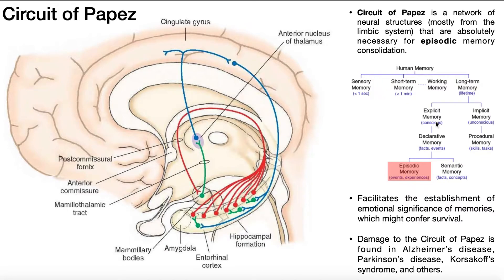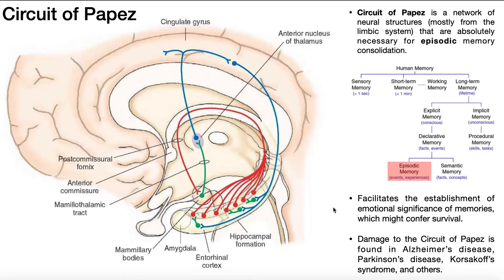Explicit memories are conscious memories, and most are declarative memories having to do either with facts or events. Semantic memory is a type of declarative memory about facts or concepts — when you're studying for a history or biology exam and learning facts to regurgitate on an exam, that's semantic memory. Episodic memory is more about events or experiences, like remembering the day you got married or graduated college. That is an episode in time. The Circuit of Papez is absolutely necessary for taking those episodes, which are initially short-term, and consolidating them into long-term memory.